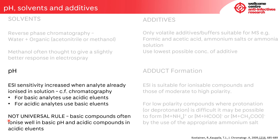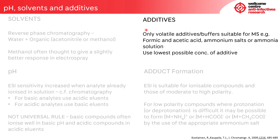One thing to be aware of is that while compounds ionized in solution may give a better mass spec response, it may prove problematic in terms of the chromatography. Only volatile additives or buffers are suitable for mass spectrometry, such as formic and acetic acid, or ammonium salts or ammonia solution. Generally you should use the lowest possible concentration of additive you can get away with, and there's typically a trade-off between the mass spec response and the chromatographic response.